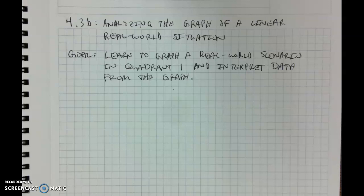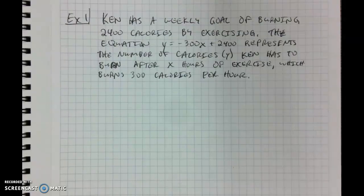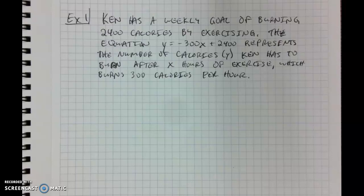We're going to take a look at a couple examples and see how we can do those things given a real-world scenario. For our first example, we have the scenario: Kent has a weekly goal of burning 2,400 calories by exercising. The equation y equals negative 300x plus 2,400 represents the number of calories — which is y — Kent has to burn after x hours of exercise, which burns 300 calories per hour.